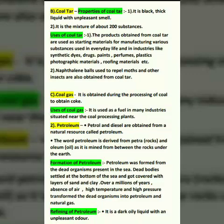The third product of coal is coal gas. It is obtained during the processing of coal to obtain coke. Uses of coal gas: it is used as fuel in many industries situated near the coal processing plants, where coal is processed to obtain coke.